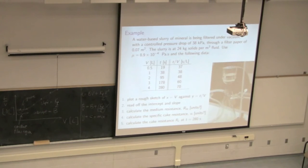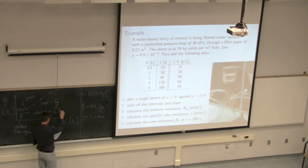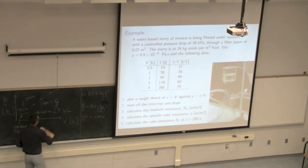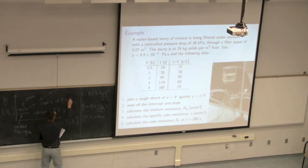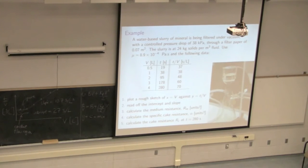So the slope is KP/2, and the intercept is equal to B. That's how we estimate the constants B and KP — by plotting T/V versus V at constant delta P. For a given delta P, we estimate the intercept and slope. In this particular example, the intercept is 27 seconds per liter, and the slope is 10.7 seconds per liter squared. This example is on the course website in a spreadsheet for you to look at.